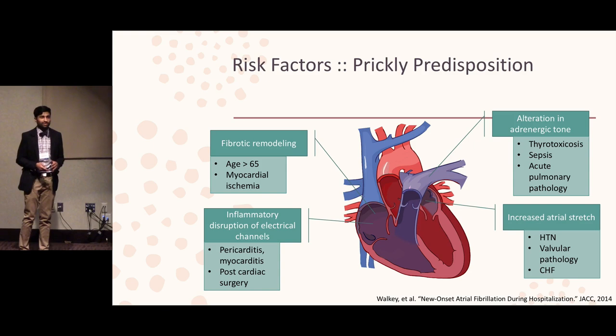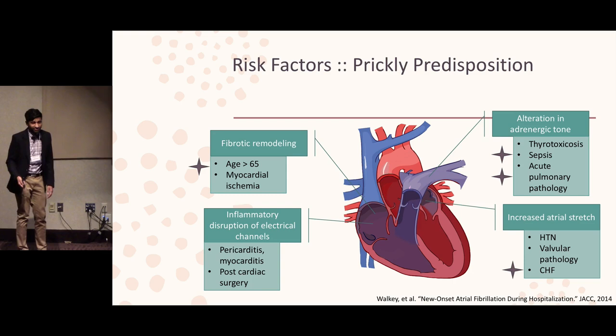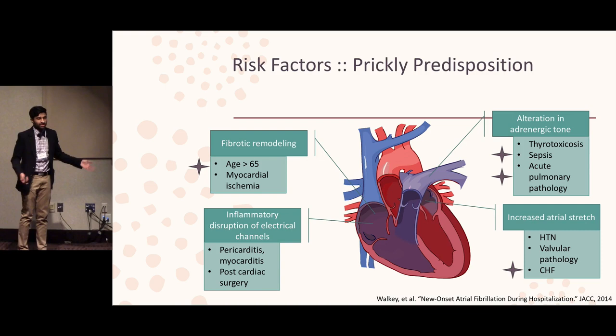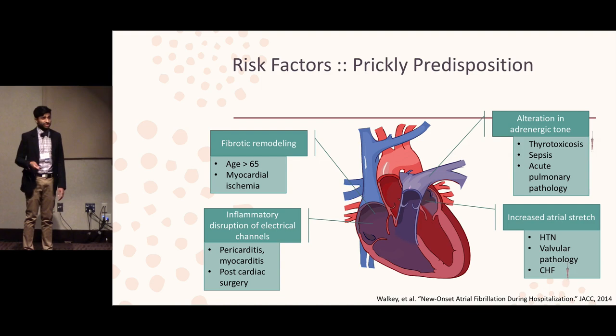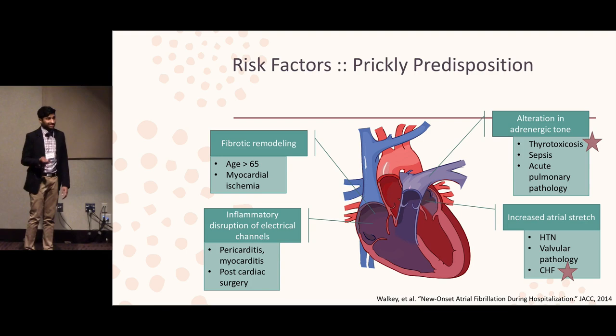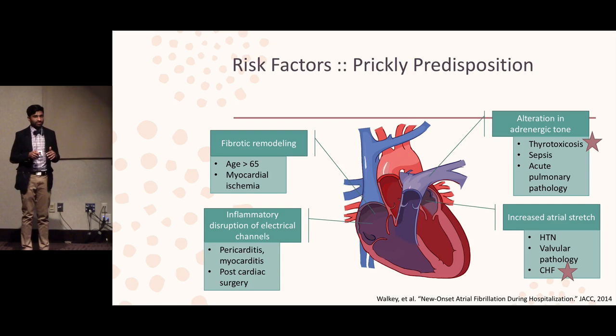I'm not going to belabor the points of every single potential etiology, because there's a slew of ICU cases that have many of these that don't go into AFib with RVR. So what do you need to know overnight? What are some key clinical conditions that are going to change your medical management, and determine if a cardioversion is actually going to stick — like thyrotoxicosis or acute decompensated heart failure? Big picture: AFib is usually a sign of something underlying.